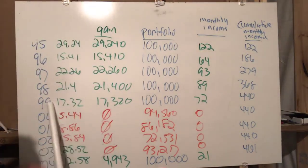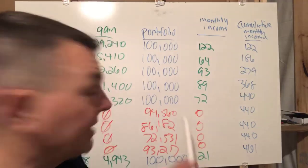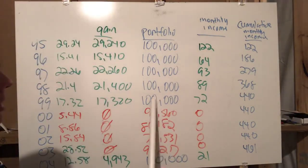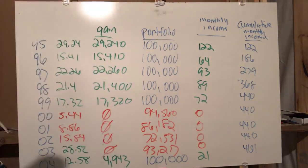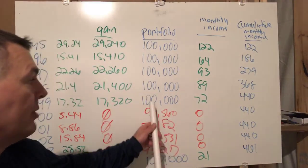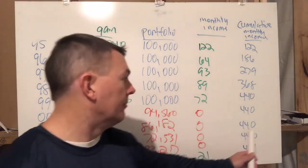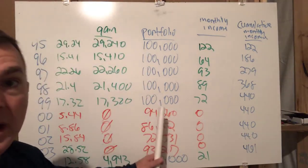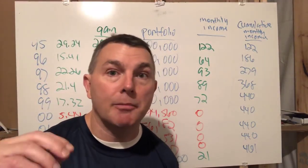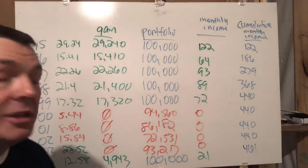At the end of 1999, going into the new millennium — when everyone thought Y2K was going to be catastrophic; I was actually at Vanguard when that happened — we have a hundred thousand dollars and four hundred forty dollars a month of guaranteed monthly income. But in 2000 we're down five point four four percent, which means we only had ninety-four thousand five hundred sixty dollars. The premise is that the minute it drops below our starting base of a hundred thousand dollars, we don't do anything. So we still have four hundred forty dollars a month because we're only taking the gains.